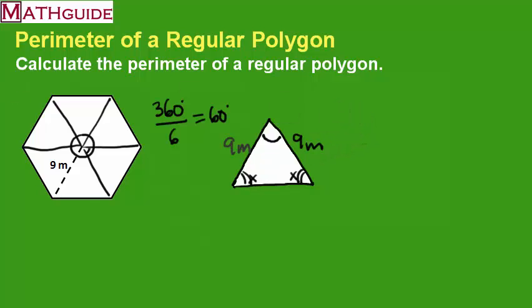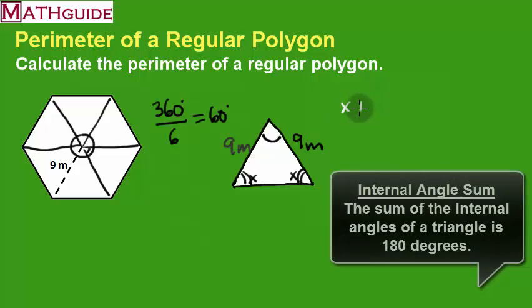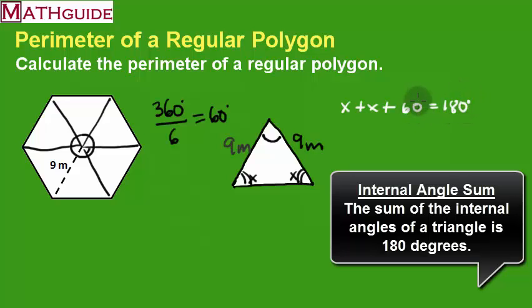I know that if I were to do a little calculation, I know that x plus x plus the top angle is 60 degrees. I know that because it's a triangle, all three of those angles have to add up to be 180 degrees.